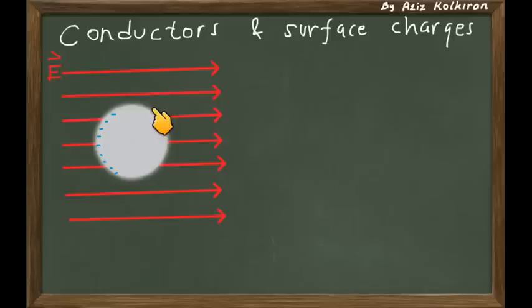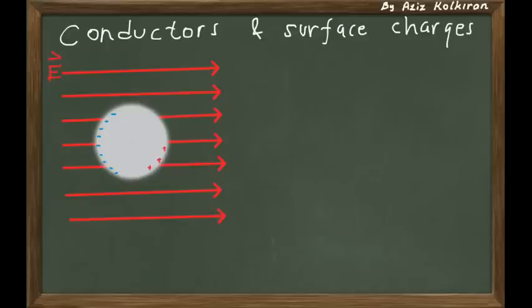If some of the electrons are going to the left-hand side, then the net charge distribution is changed. In that case, some positive charges must be accumulated on the right-hand side, so that the total charge remains equal to zero. As soon as this configuration is there — some charges on the left and some on the right — this phenomenon is called polarization. The net charge is zero, but electrons are moving to one side, leaving exposed protons on the other side. So the metal is polarized.